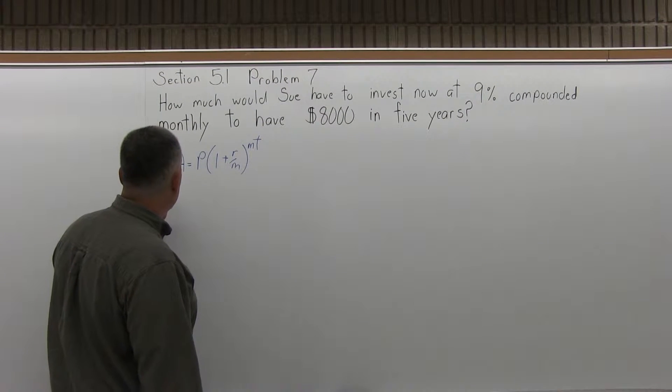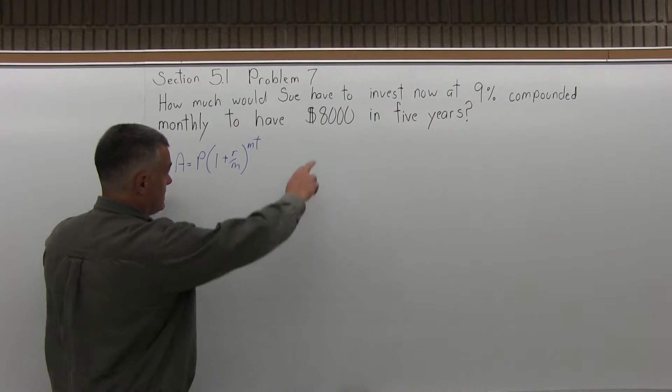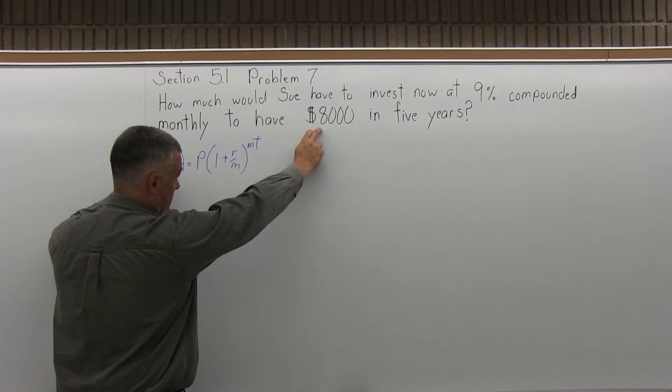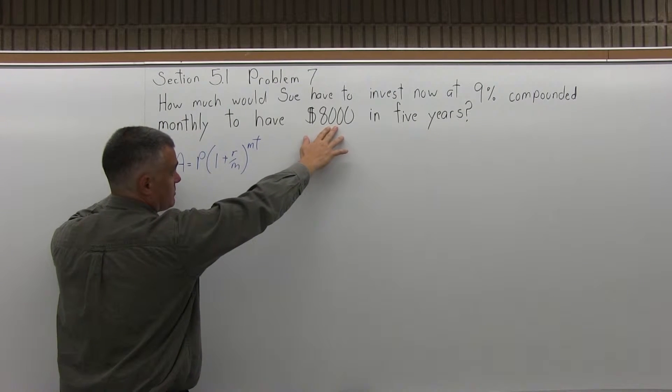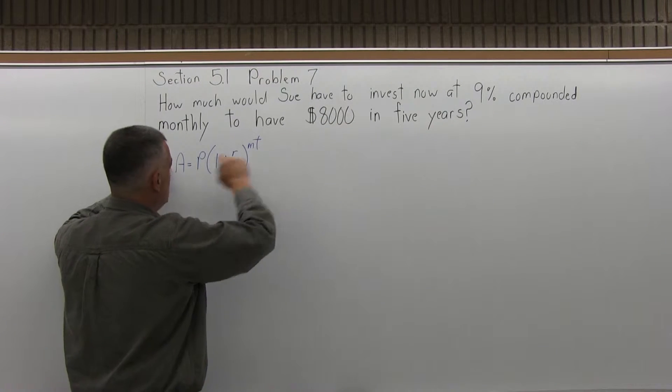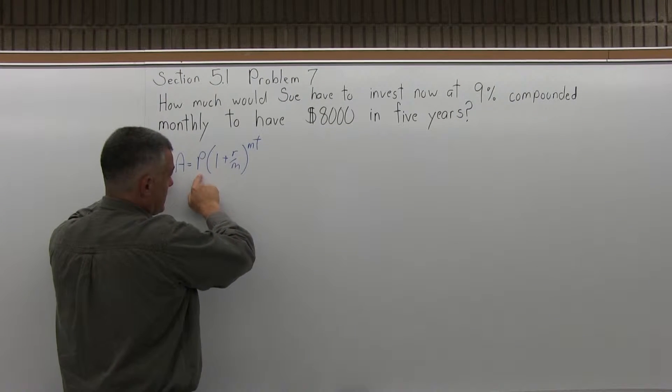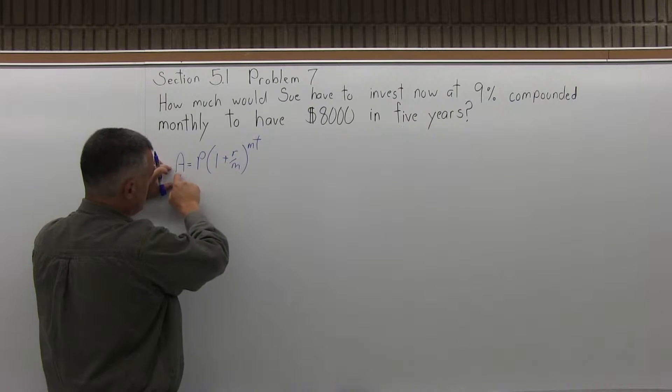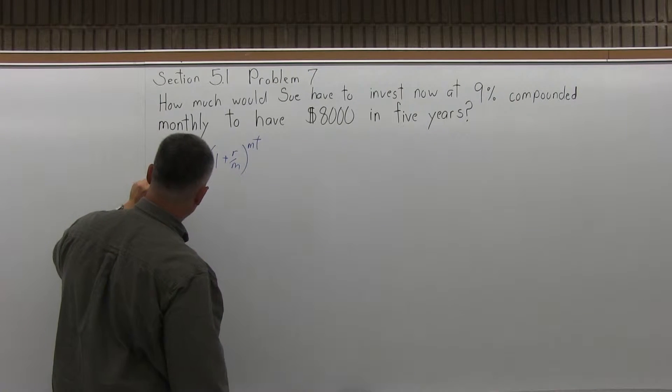Now A is the final amount, which in this case is $8,000. That's the final amount, not the principal. We want to figure out how much you put in. In the last problem it was about $5,500, so it should be somewhere in that range now. That doesn't go in for P. That's what we'll solve for. The 8,000 goes in for A, the final amount.